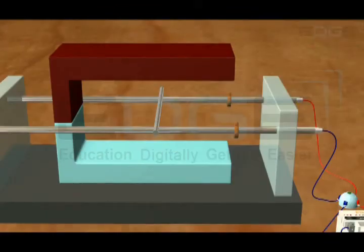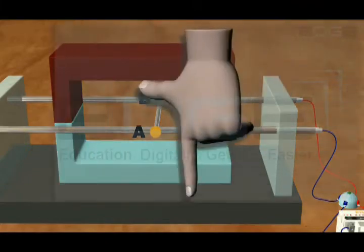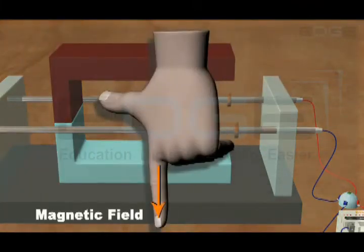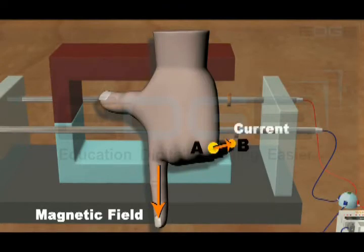The current flows through the conductor from point A to point B. The magnetic field is in the downward direction. So if we align the forefinger in the downward direction and the middle finger in the direction from A to B, then the thumb points towards the left.